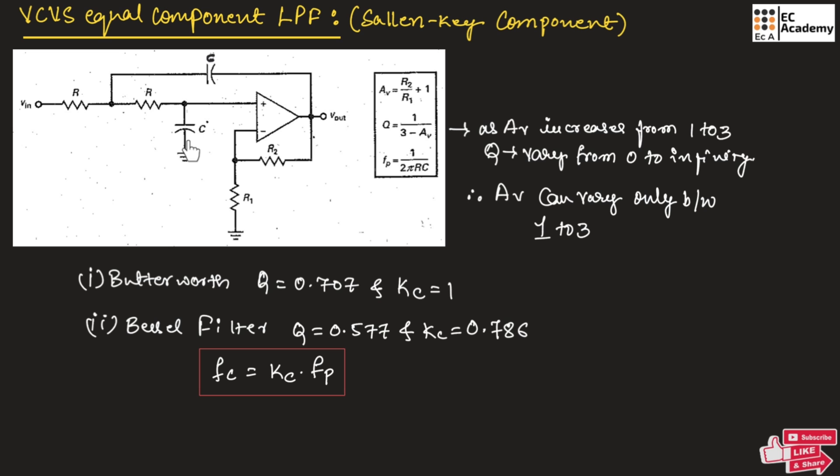For high frequency, this capacitor will act as short circuit. Hence, all the high frequencies will pass through this capacitor towards ground. Hence, this circuit will allow only low frequencies and it will attenuate all the high frequencies.